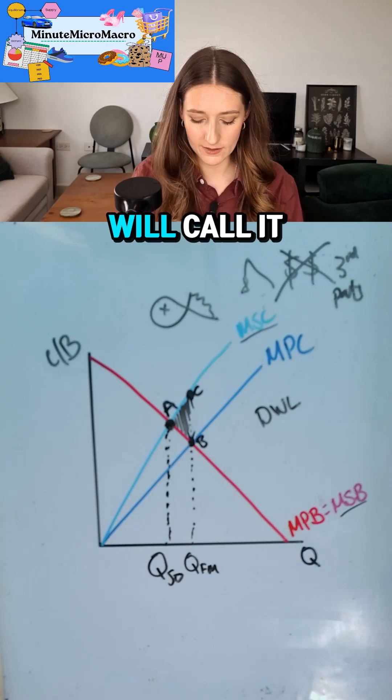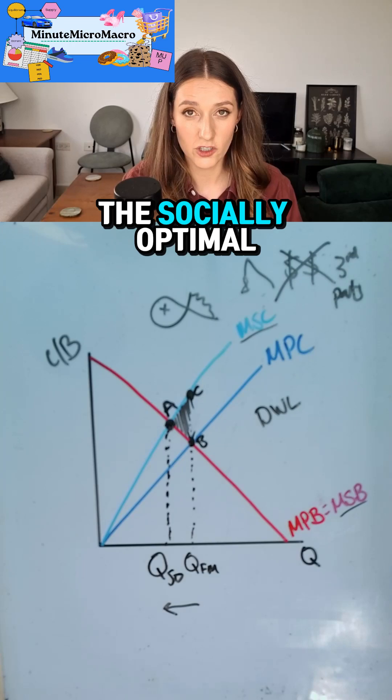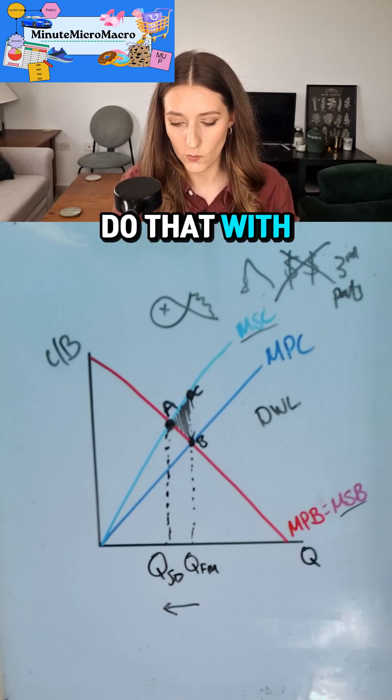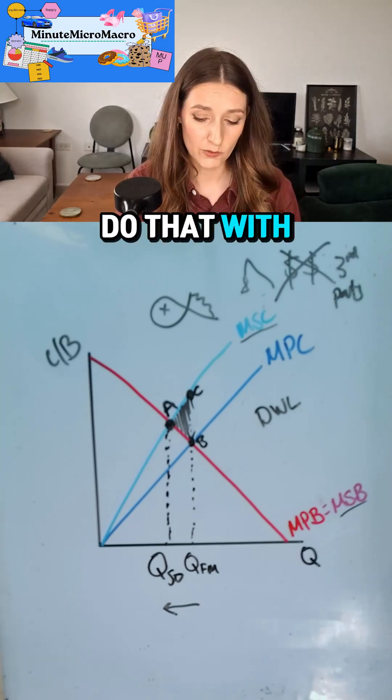We want to reduce the quantity back down to the socially optimal level, and you can do that with taxes, you can do that with price limits, you can do that with regulations.